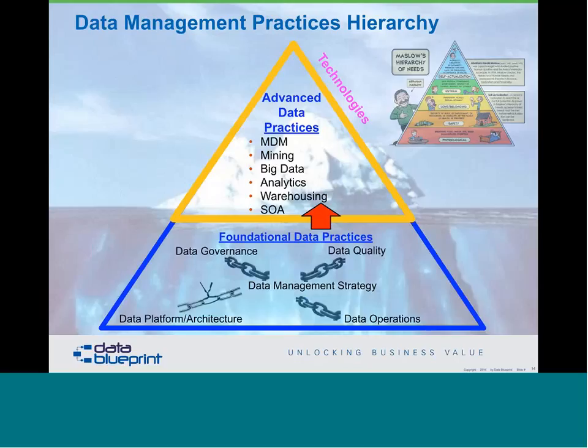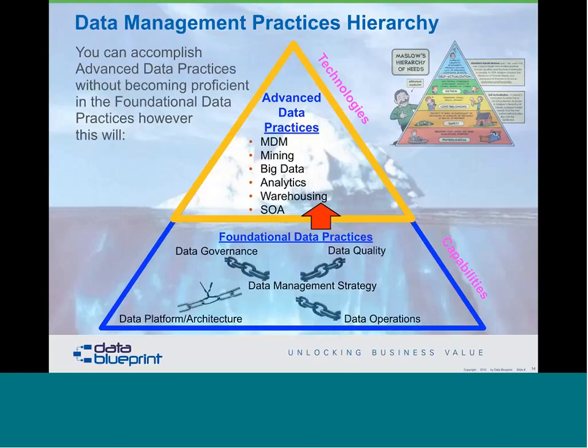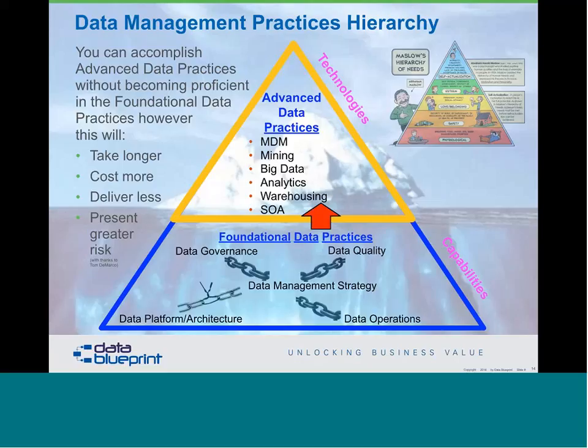If you're going after any of the things in that triangle from a technology approach, you need to develop organizational capabilities to come up with good, solid practice areas. The foundation is only as strong as the weakest link — in this instance, the link at platform and architecture, indicating to a particular organization that they could put more money into governance and quality and it wouldn't do them any good until they correct the deficiencies in their data platform and architecture. The answer is yes, you can do the top part without doing the bottom part, but it will take you longer, cost more, deliver less, and present greater risk than instead crawling, walking, and running your way to the top.